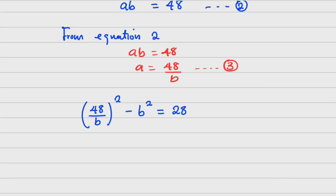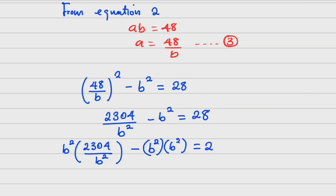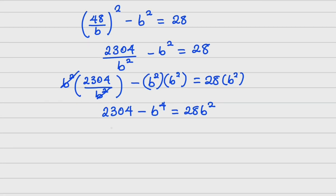Squaring 48 gives 2304, so I have 2304 / b² minus b² = 28. I can clear the fraction by multiplying through by b². This gives 2304 minus b⁴ = 28b².